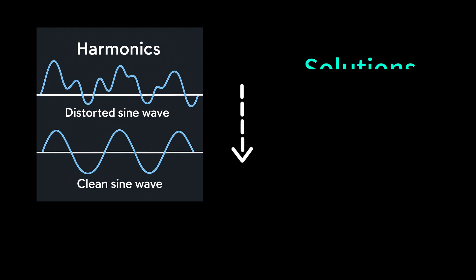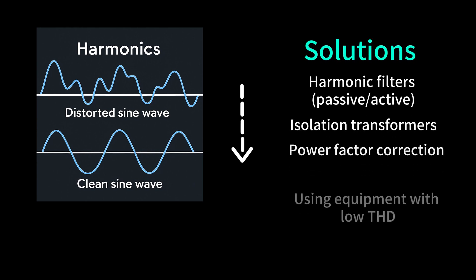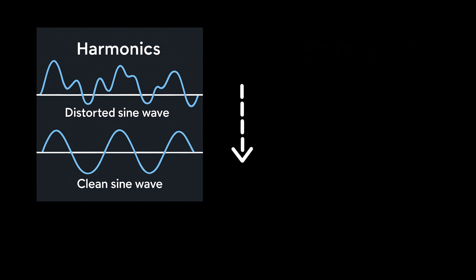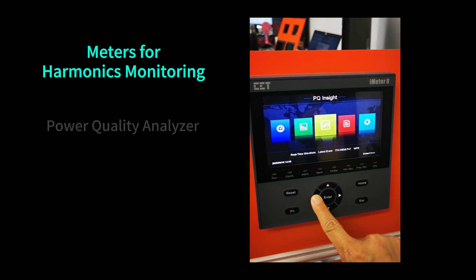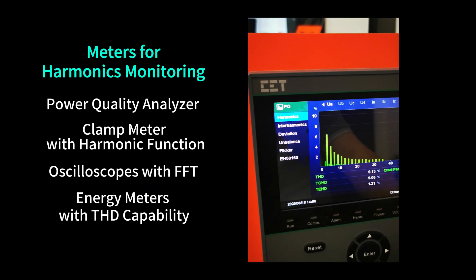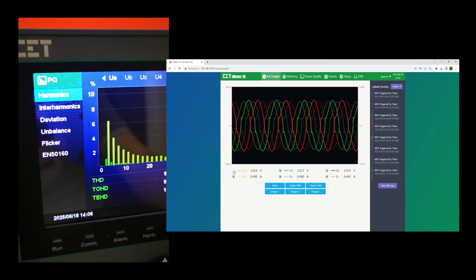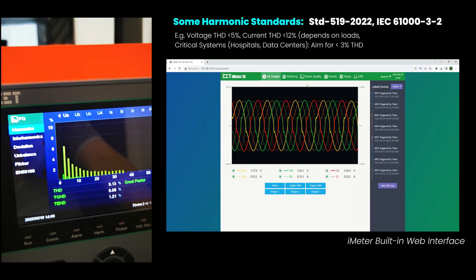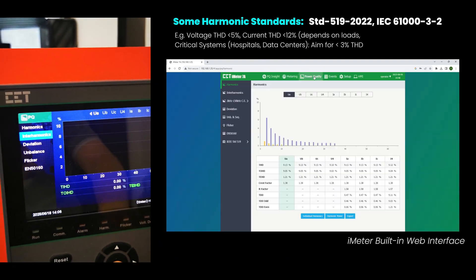There are many solutions to the harmonic problem — for example, harmonic filters. However, the first step is to install a harmonic monitoring device to identify the problem and then find the right solution.